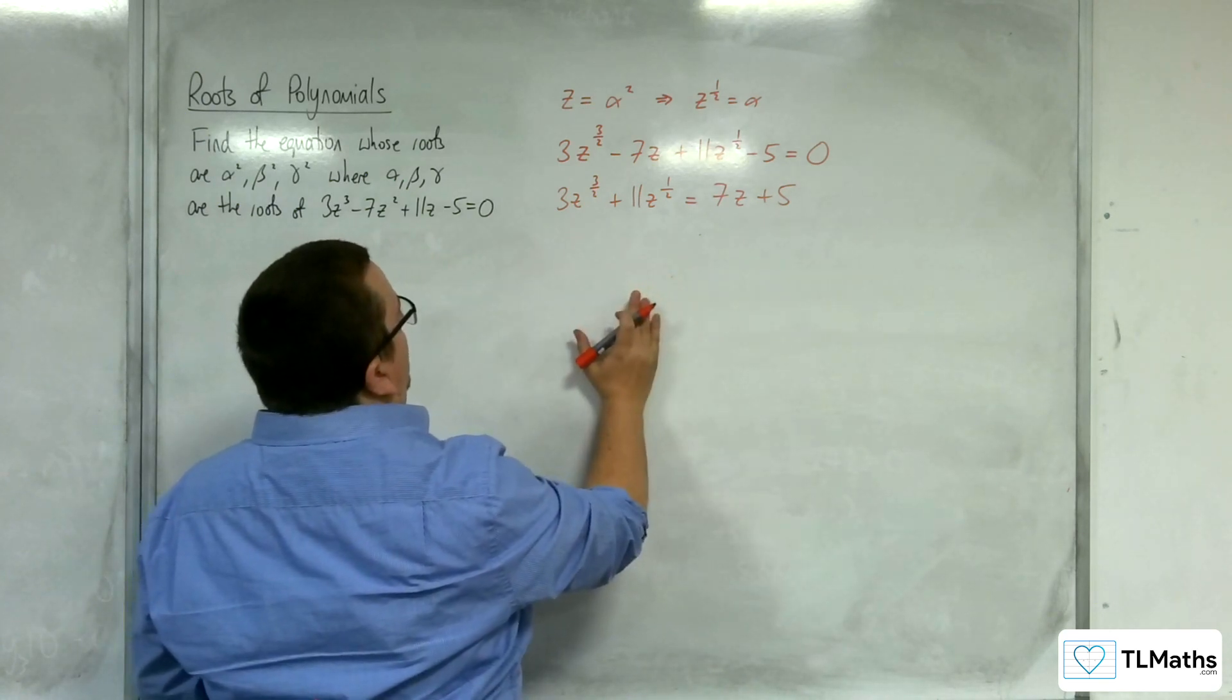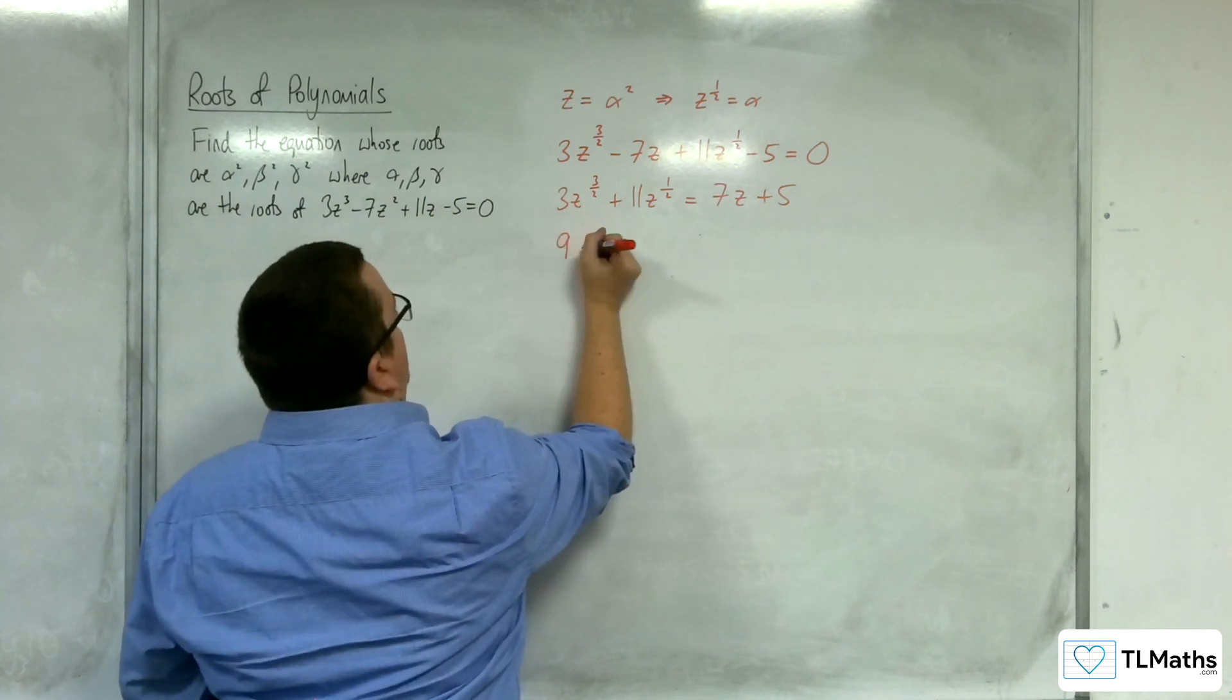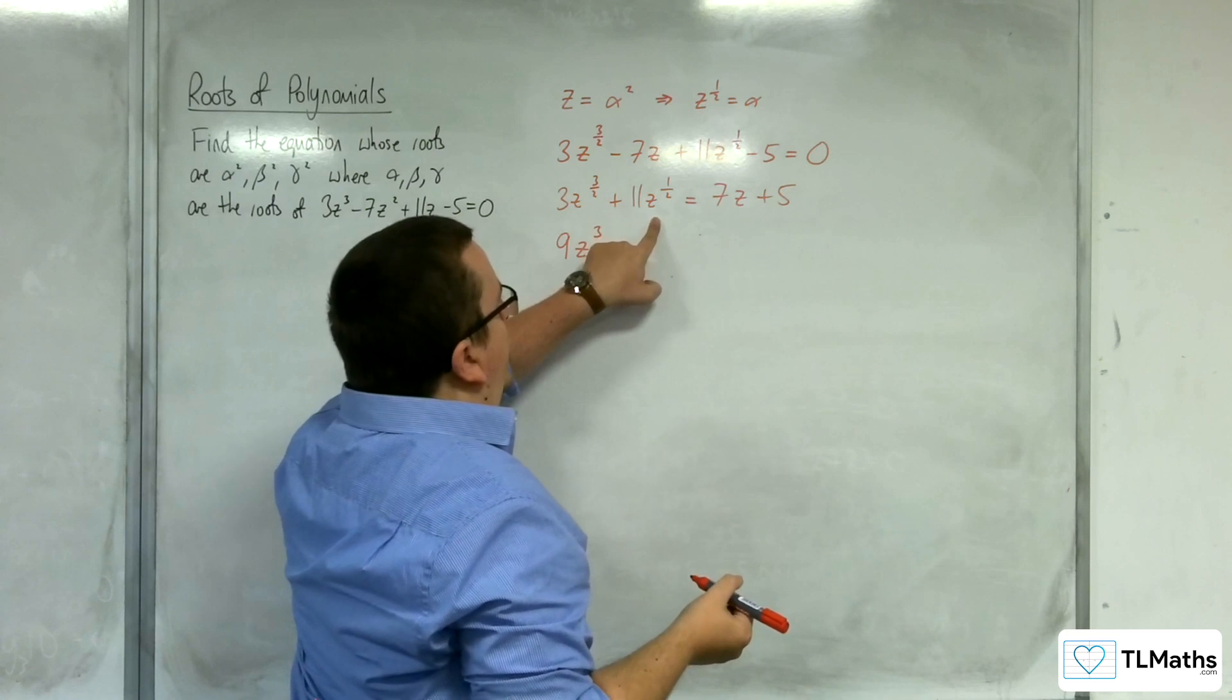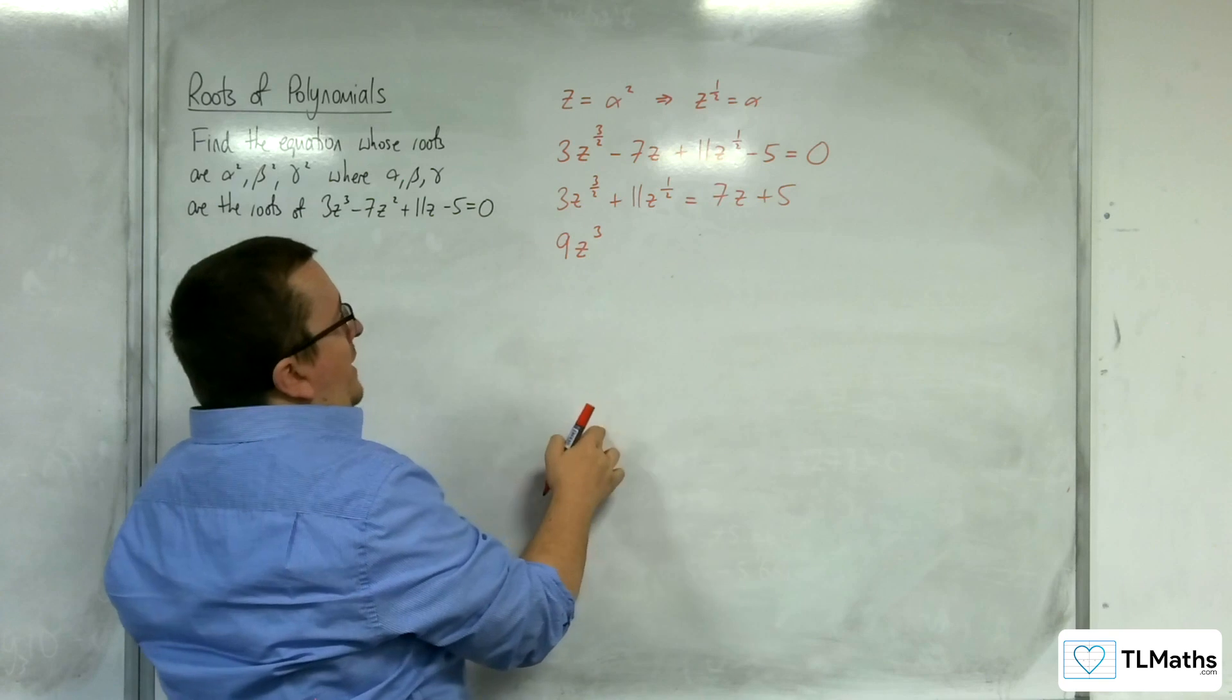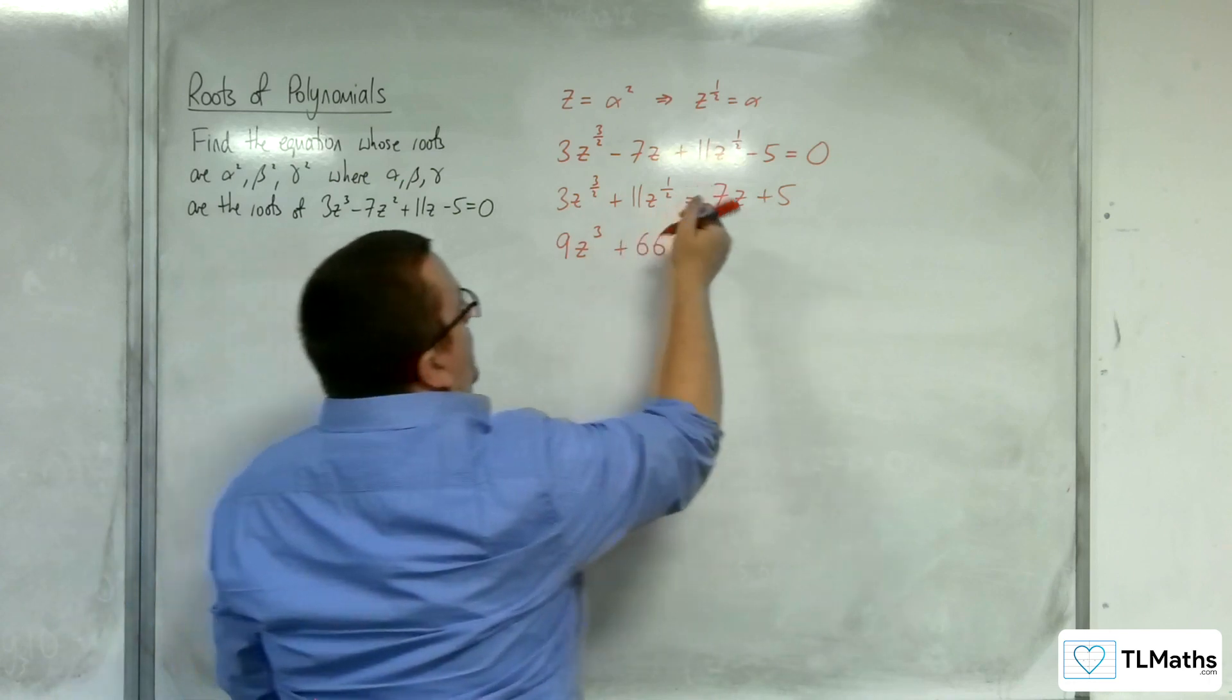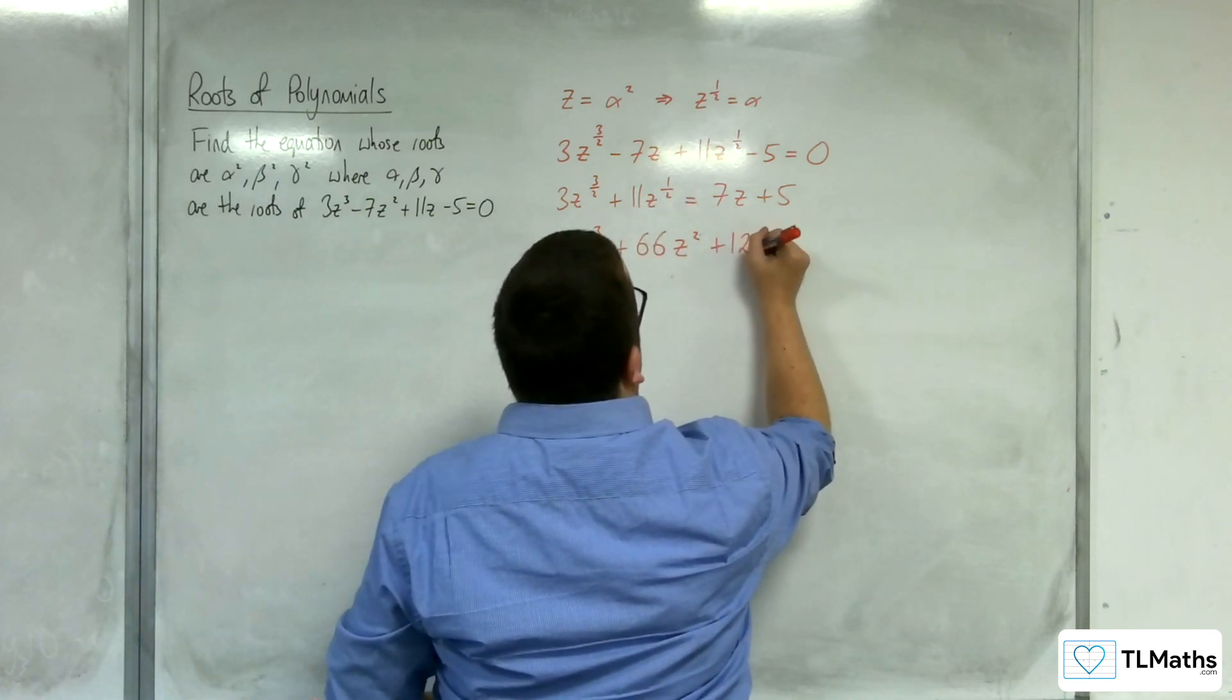If I'm squaring both sides now, I'm going to get 3z to the 3 halves squared, so that would be 9z³, then I'm going to get 3z to the 3 halves times 11z to the half twice, so that's 2 times 3 times 11, so 66, and then z to the 3 halves times z to the half is z²,